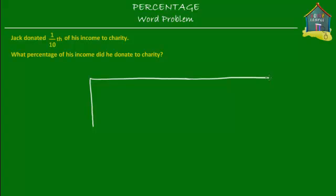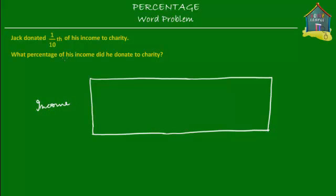I'm making a big block — you'll see why later. This block of money represents the income that Jack makes. Jack has this block of income, and what we know is a tenth of his income is how much he gave to charity. So if his income is divided into 10 equal parts, then one out of those 10 parts is how much he gave to charity, because that would be the fraction one tenth.